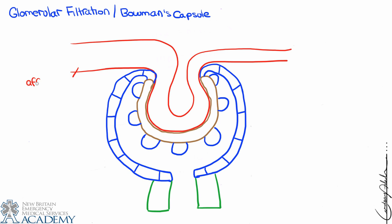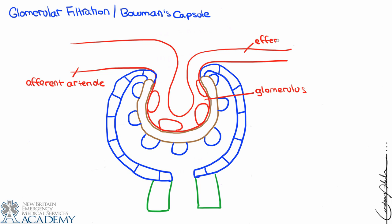In this drawing the afferent arteriole is noticeably wider than the efferent arteriole. The capillary structure that sits in Bowman's capsule is called the glomerulus, and it's an example of a fenestrated capillary, meaning there are pores in the capillary on purpose. The efferent arteriole exits Bowman's capsule and will continue on to become the peritubular capillary.